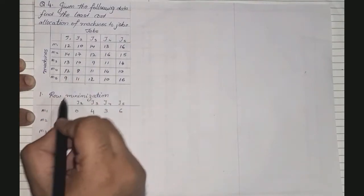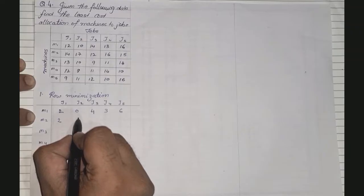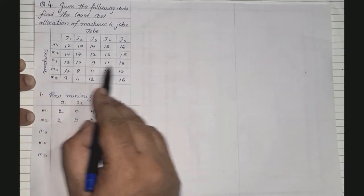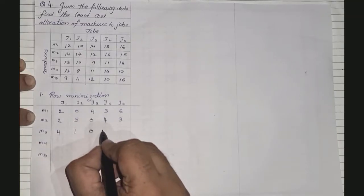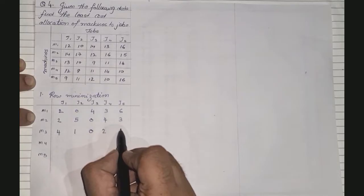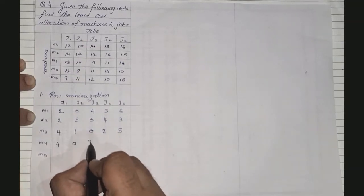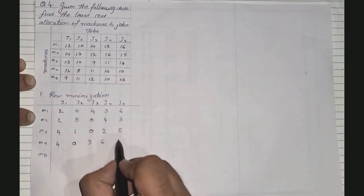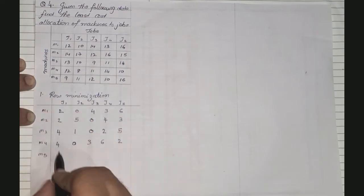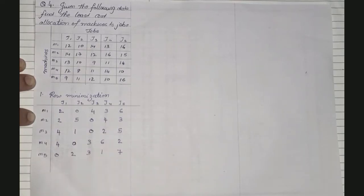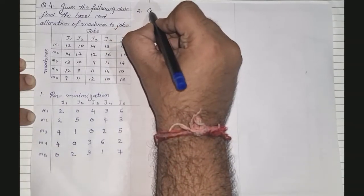For M3, the lowest value is 9: 13−9=4, 10−9=1, 9−9=0, 11−9=2, 14−9=5. For M4, the lowest value is 8: 12−8=4, 8−8=0, 11−8=3, 14−8=6, 10−8=2. That completes step one — row minimization. Step number two is to find column minimization.